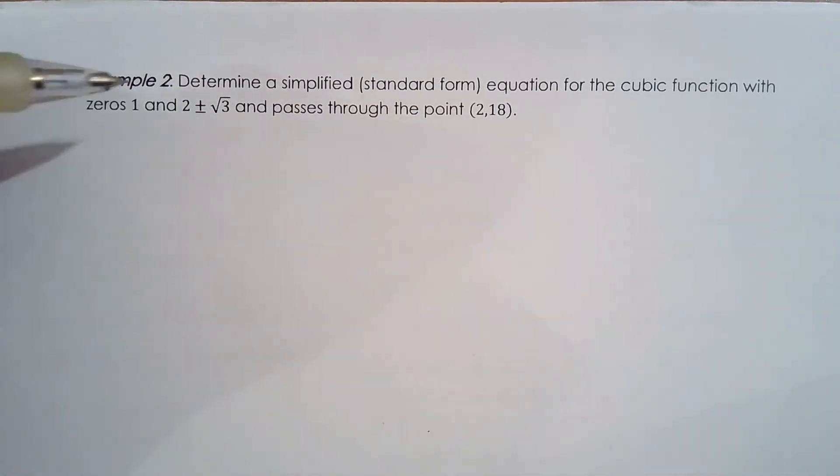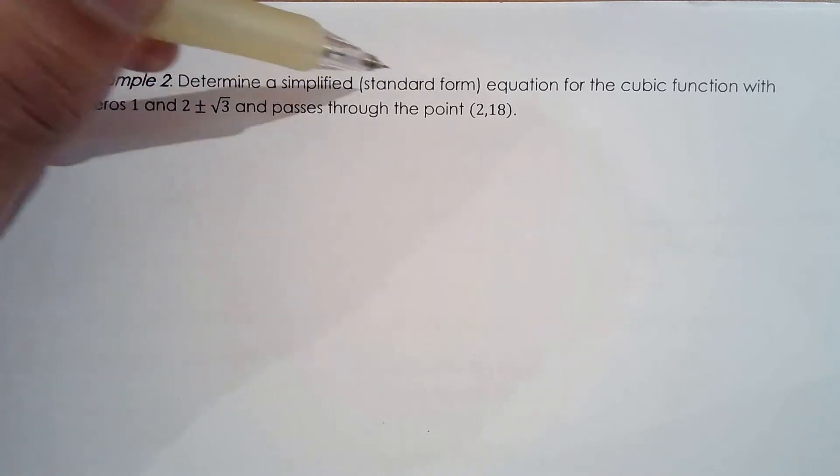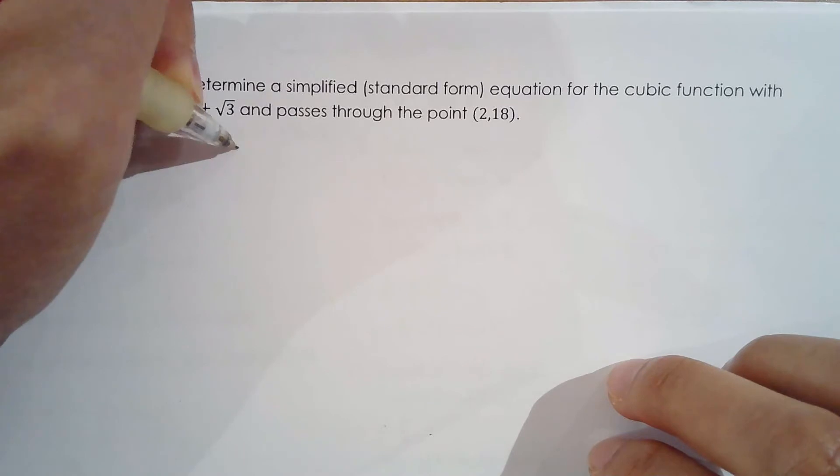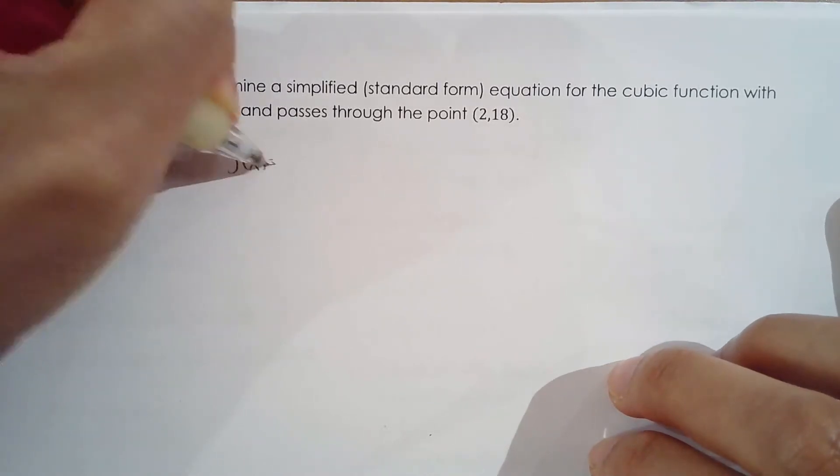So this is a very common question. So let's tackle this one. Determine a simplified standard form equation for the cubic function with zeros of 1, 2 plus or minus root 3 and also passed through the point 2, 18. Okay, so two reasons why this question is very common. We like to give you zeros which are irrational numbers like 2 plus root 3 because a lot of students write the incorrect factor. And another thing that this question focuses on is the simplifying. So we'll see there's a shortcut to write this in standard form. Okay, so first let's start with the family.